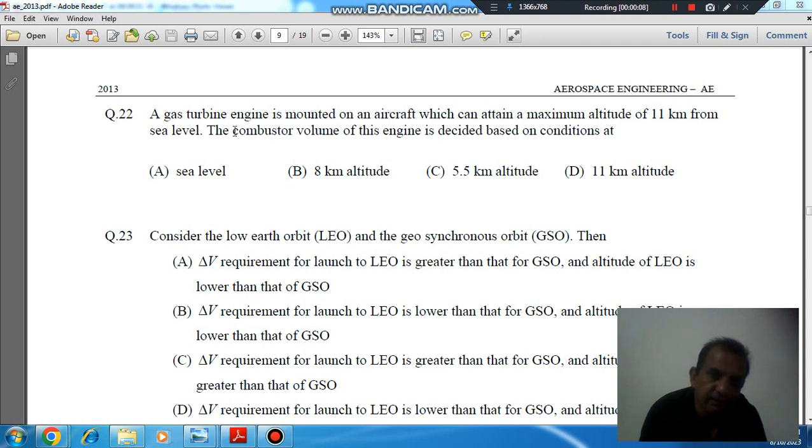A gas turbine engine is mounted on an aircraft which can attain a maximum altitude of 11 km from sea level. The combustor volume of the engine is decided based on condition at: option A sea level, option B 8 km altitude, option C 5.5 km altitude, and option D 11 km altitude.